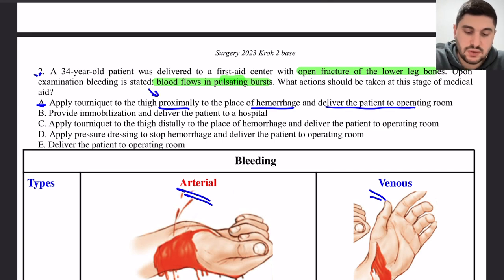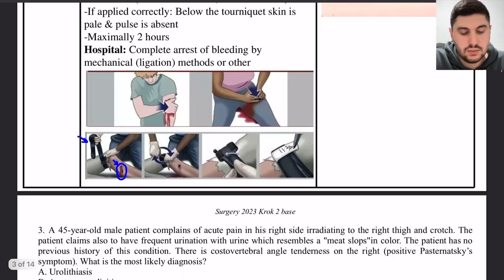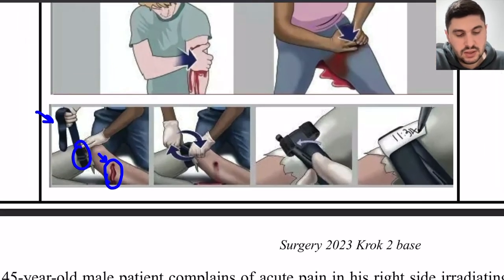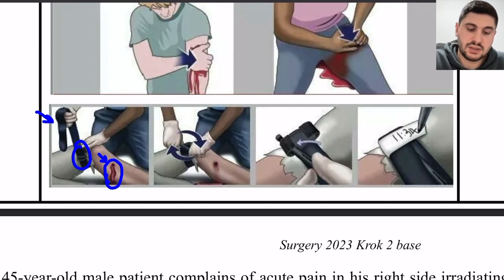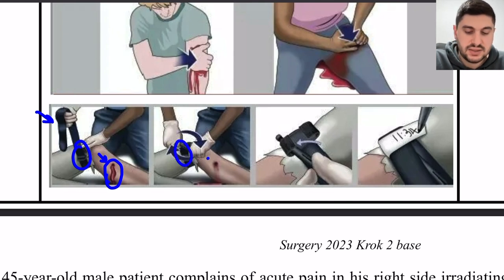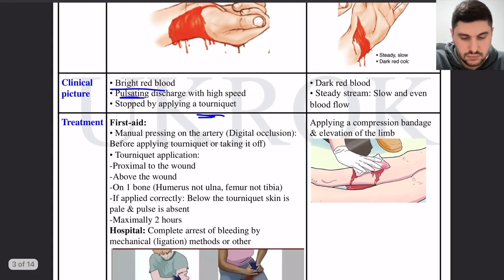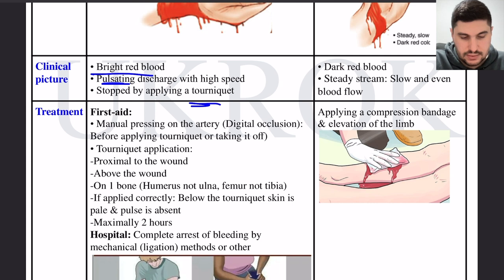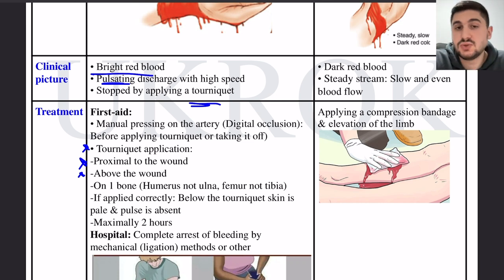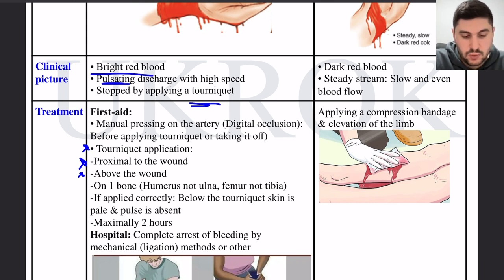The tourniquet is placed proximal to the wound — above it, not below — because we need to stop blood supply to that area. It should be in the thigh area, not distally. The tourniquet must be applied on one bone, meaning the femur.